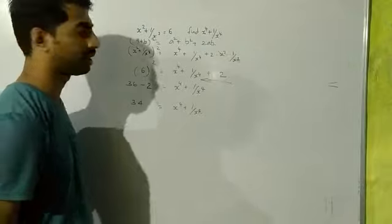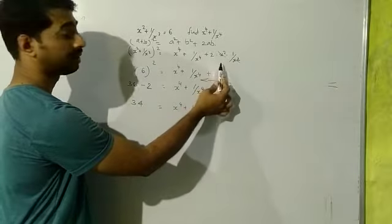So this x² and x² will cancel and only 2 remains.